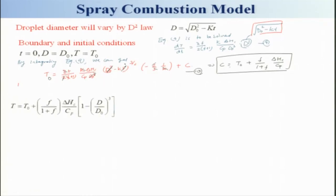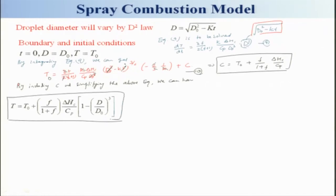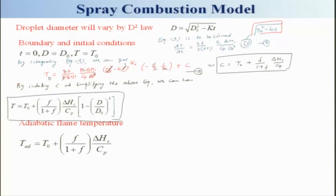By substituting the constant and simplifying, we obtain the temperature relationship: T = T₀ + [f/(1+f)] · (ΔH_c/c_p) · [1 − (d/d₀)³]. Temperature varies with d and hence with x. The adiabatic flame temperature is T_ad = T₀ + [f/(1+f)] · ΔH_c/c_p, which was derived earlier.